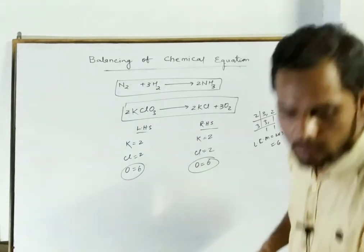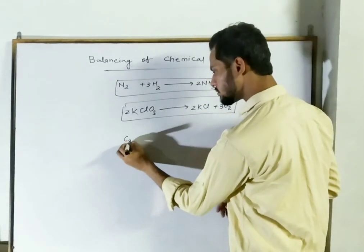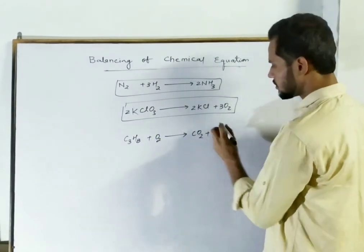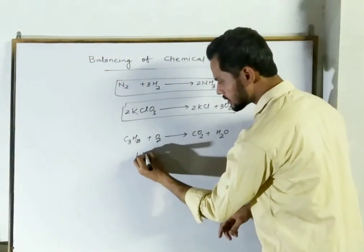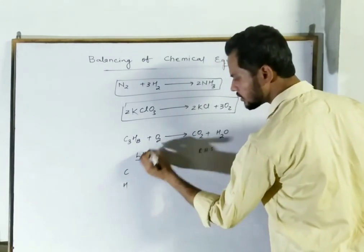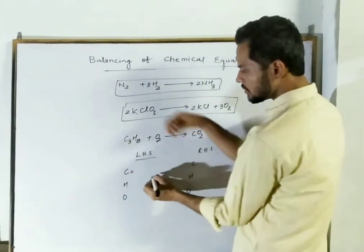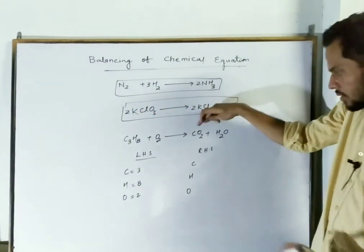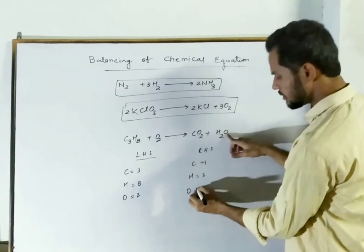Now let us take another example. We have C₃H₈ reacting with oxygen to give carbon dioxide gas and water. First write LHS on the reactant side and RHS on the product side. In LHS we have carbon, hydrogen, and oxygen. In RHS we also have carbon, hydrogen, and oxygen. The number of elements: in LHS we have 3 carbon, 8 hydrogen, and 2 oxygen; in RHS we have 1 carbon, 2 hydrogen, and a total of 3 oxygen (2 from CO₂ and 1 from H₂O).